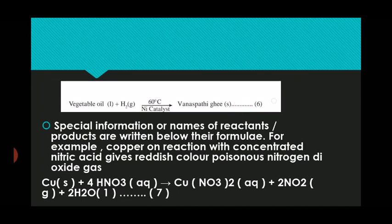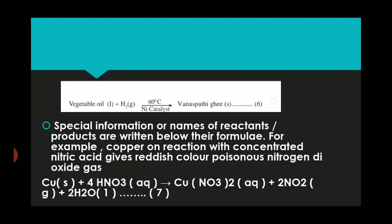Now come to the sixth and last point. Special information or names of the reactants and products are written below their formula. For example, copper reacts with concentrated nitric acid — 4HNO3 — to give copper nitrate in aqueous solution plus 2NO2, which is a reddish-colored poisonous nitrogen dioxide gas, plus H2O as the product. So these six steps are very important for writing a chemical equation.